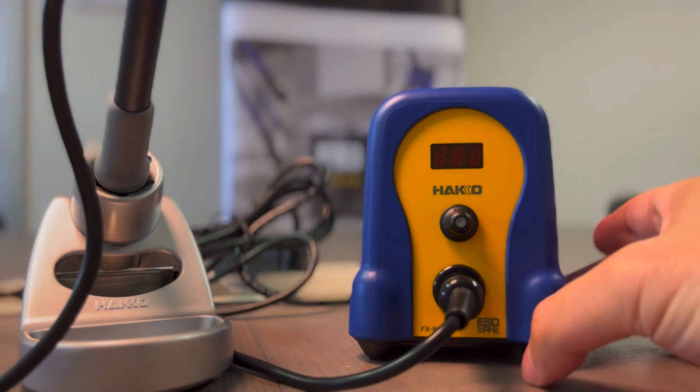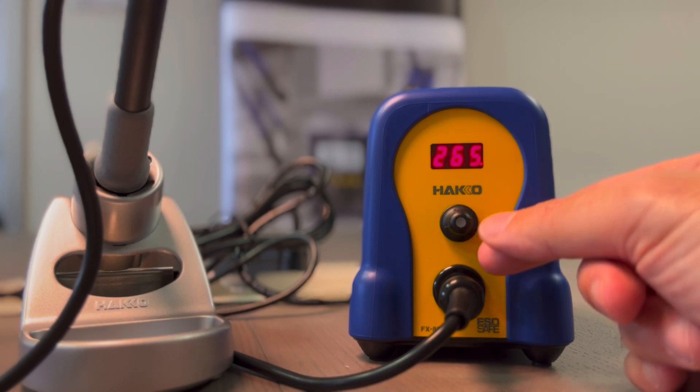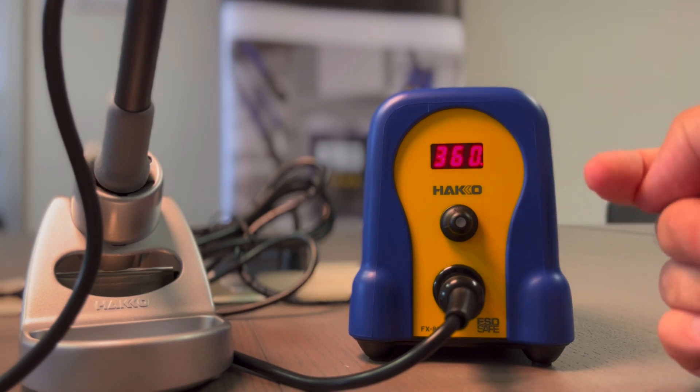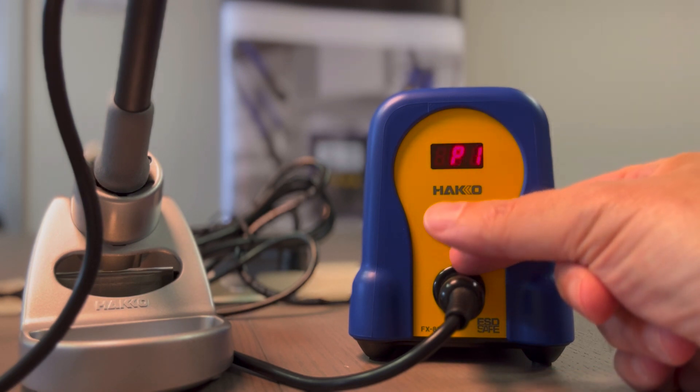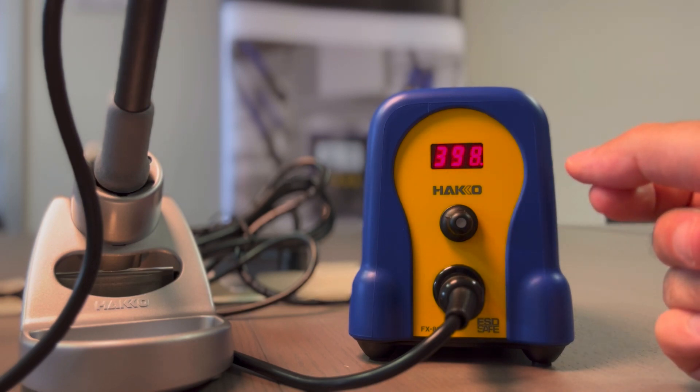So now if we switch off the unit and switch on the unit again, we should see the change. If you remember, before we just moved the knob and set the temperature by scrolling. Now we should see P1 and P2. We move and as you can see, P1 and P2. If we press P2, it goes up to the fixed temperature. As you can see, it is very easy.